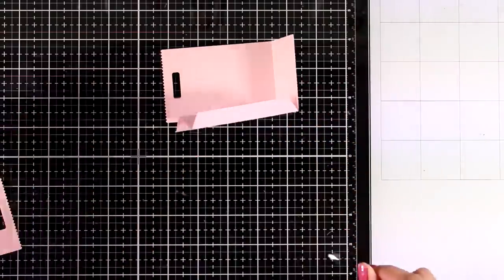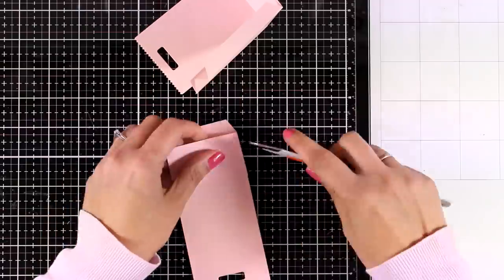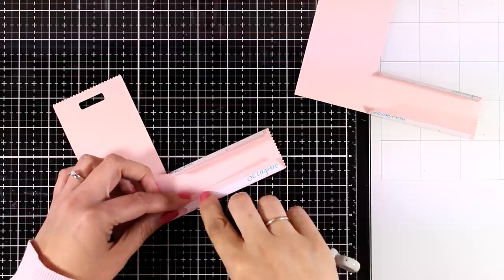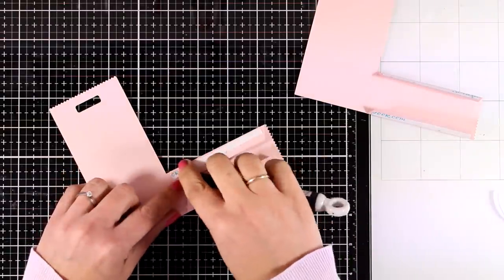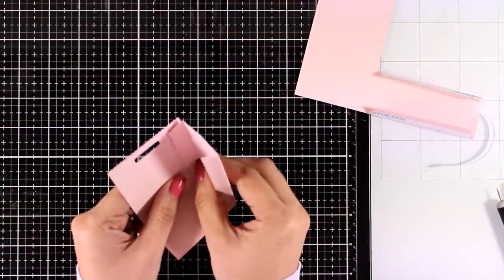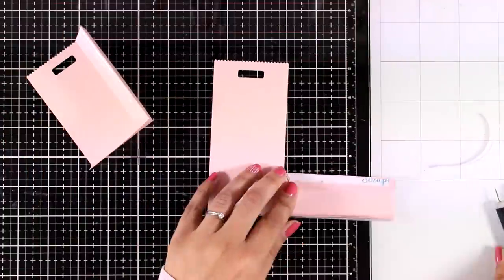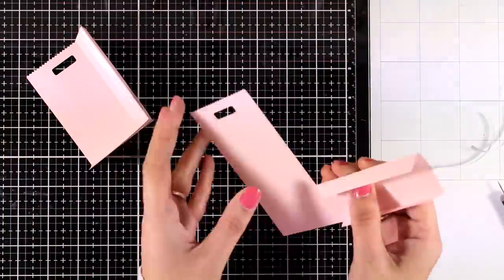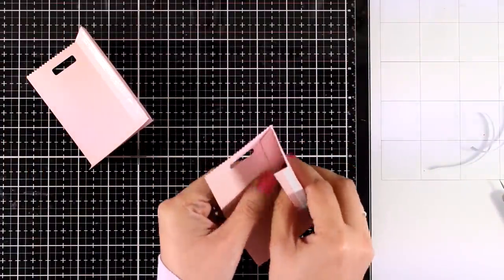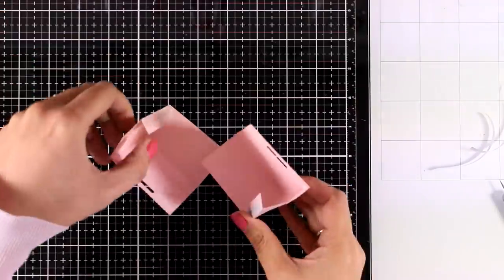I have already added some score tape on the flaps. Now I'm going to remove the backing and put my little treat bag together. You will end up with two identical pieces that you can slide one on top of the other and the box comes together really easy.